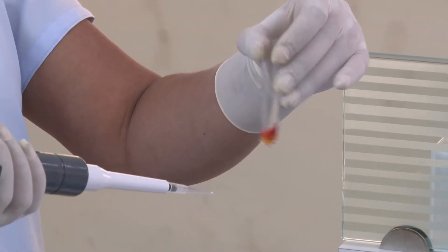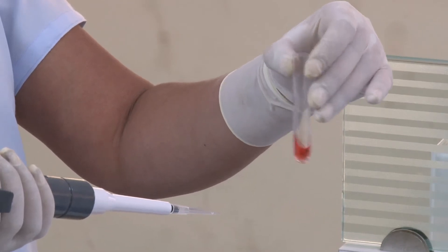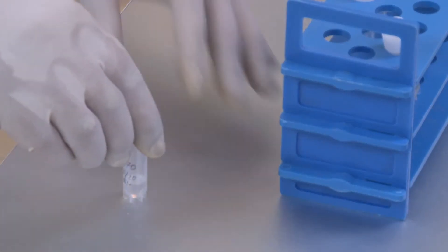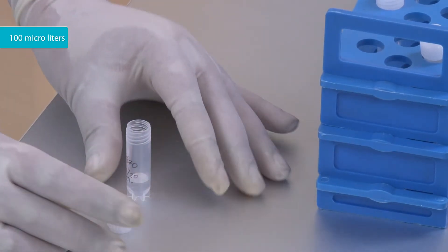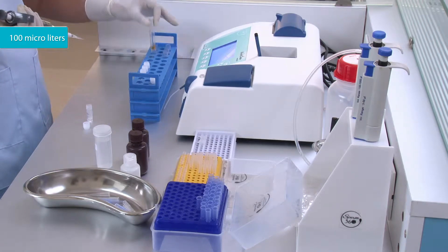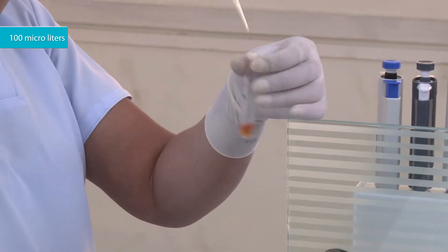Shake it well. Add 100 microliters of diluted seminal plasma to the tube labeled test. Shake it well.